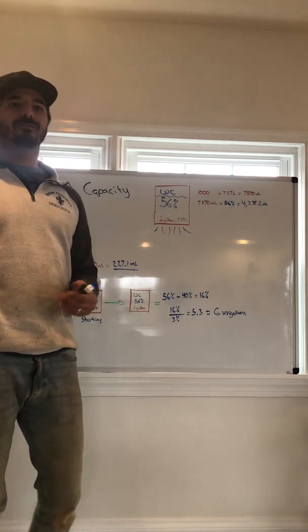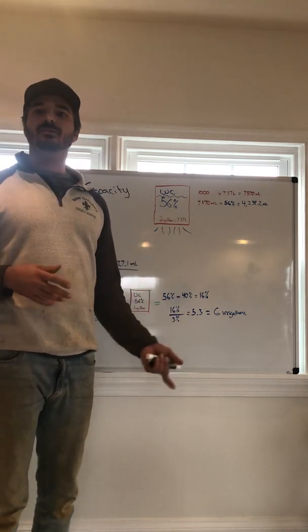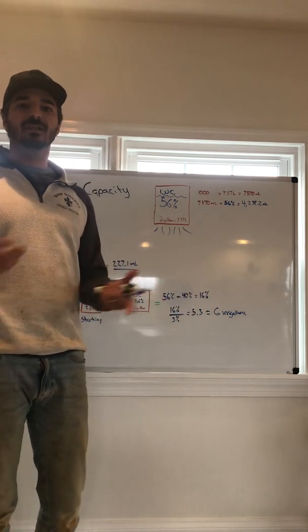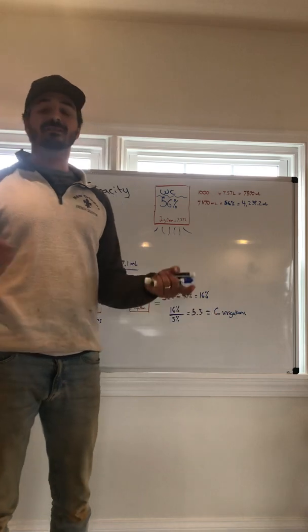In rockwool, you tend to have a higher field capacity depending upon which substrate you choose. So slabs tend to be between 70 and 80 percent. Hugo blocks tend to be between 50 and 65 percent.